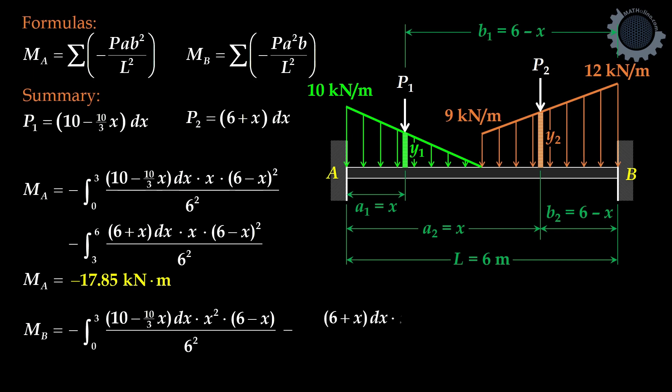Plus negative P2 A2 squared B2 all over L squared, sum up from 3 to 6. Moment at B is equal to negative 23.775 kilonewton meters.